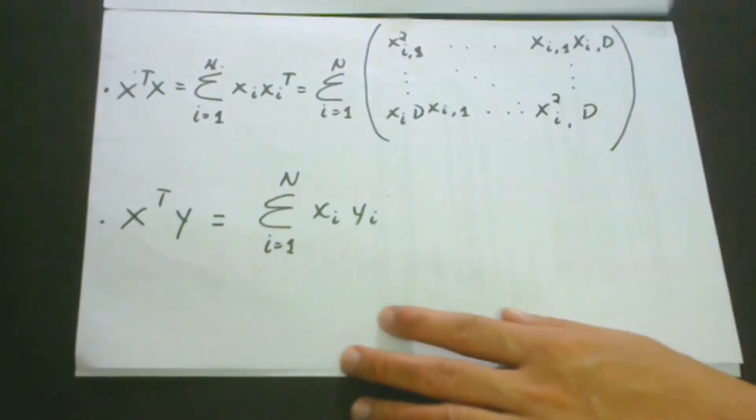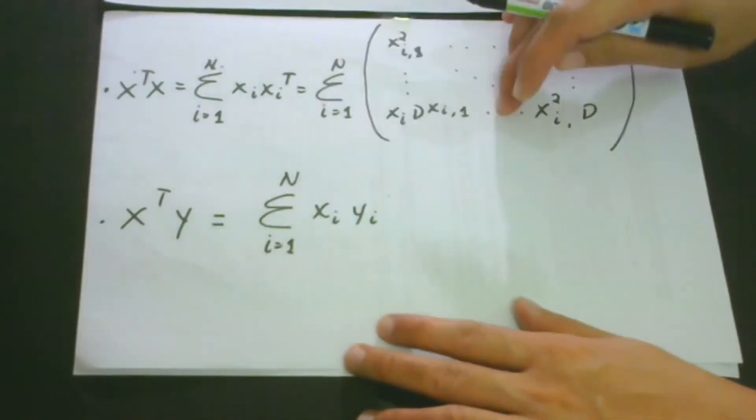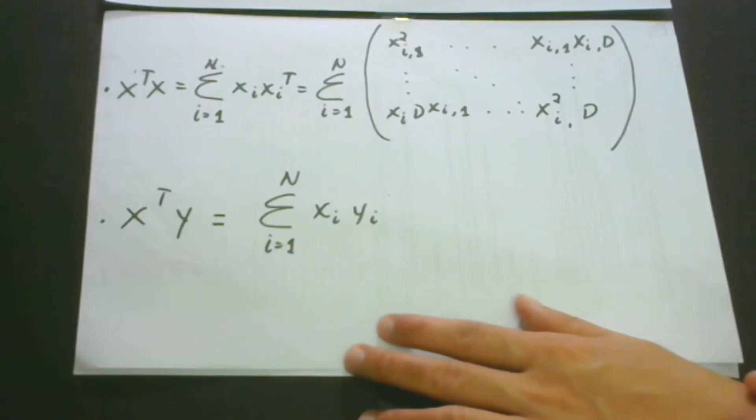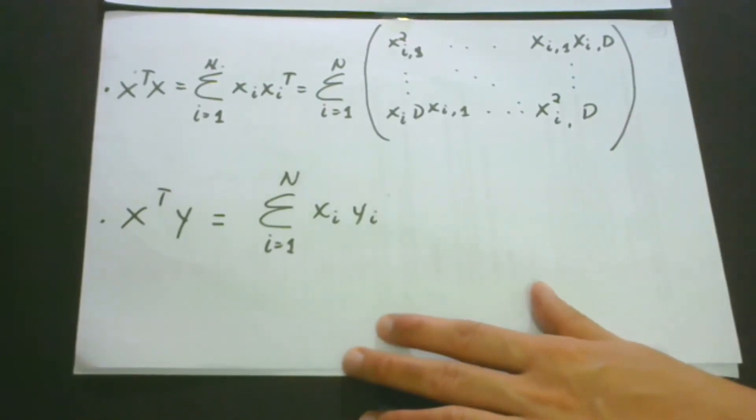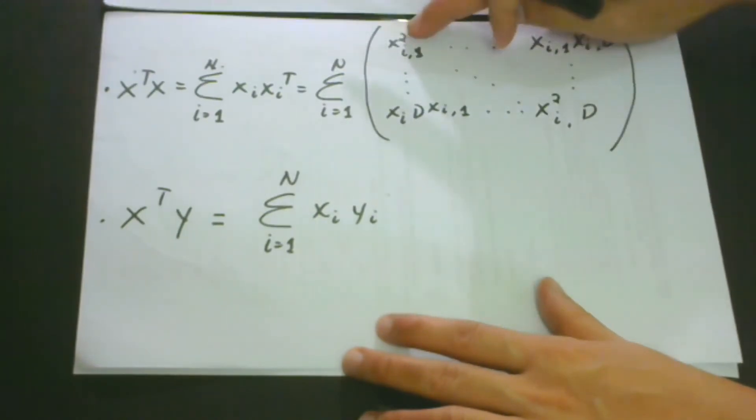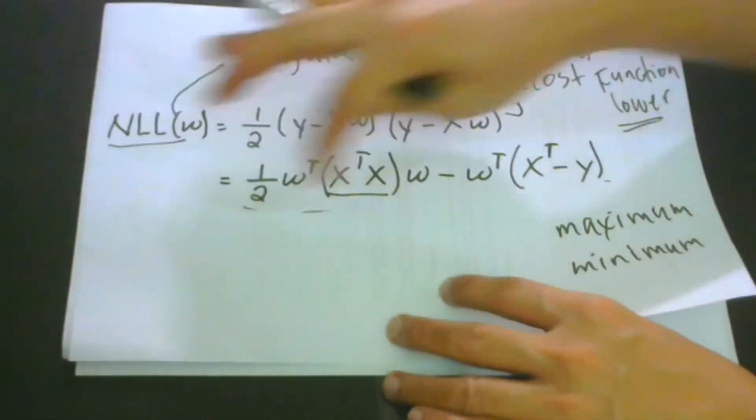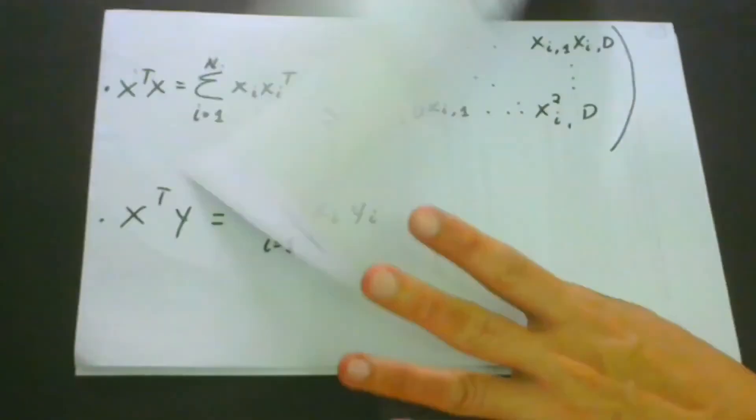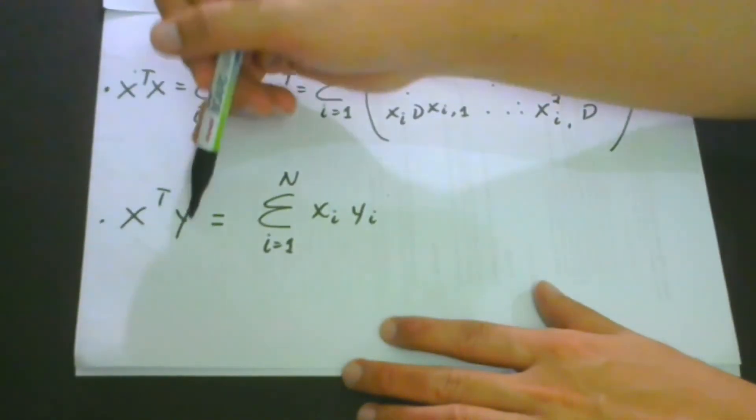The x transpose x is actually this one. As you could see, this is again in matrix form. You could see here the diagonal, and in the diagonal you could see the squared form of x. Processing these terms, we could get x transpose y also.